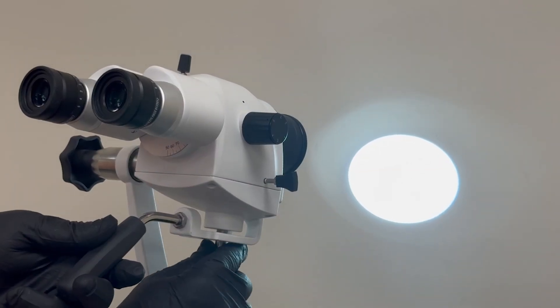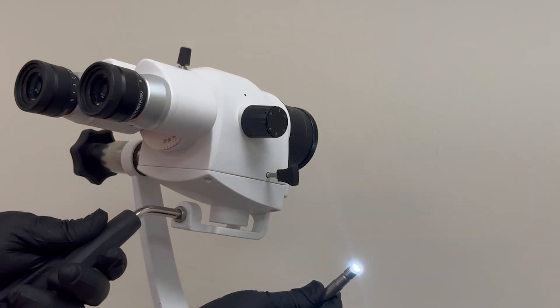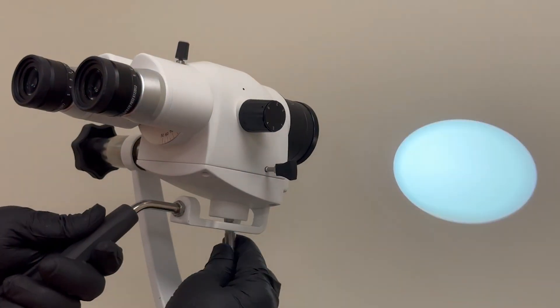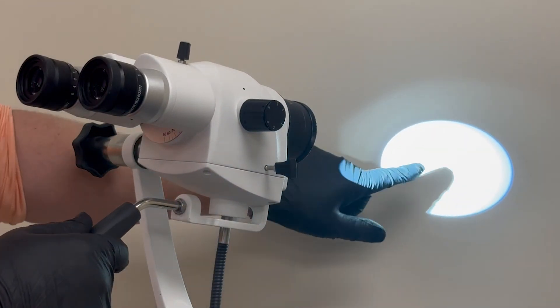Siler Colposcopes utilize technology known as coaxial illumination. This innovative approach to lighting transports light directly to the optics, ensuring an illumination path that is perfectly aligned with the viewing axis.